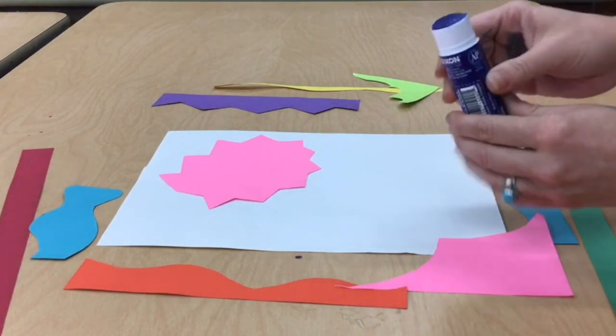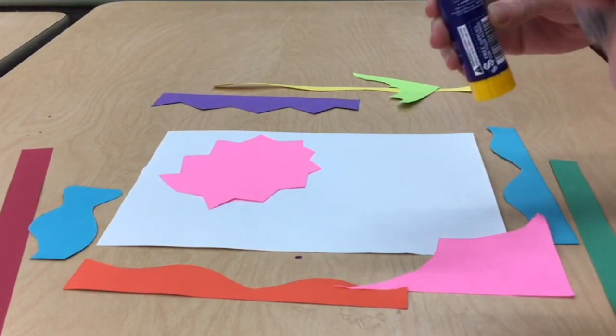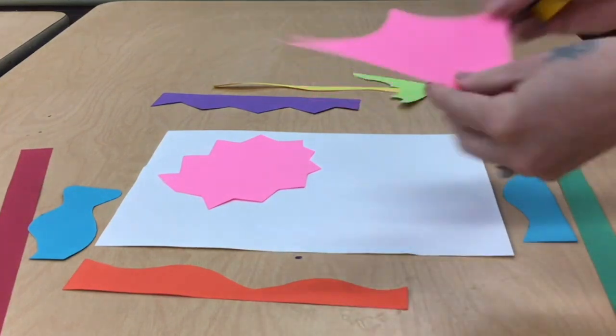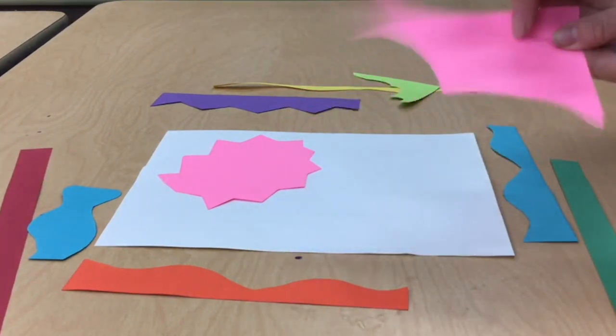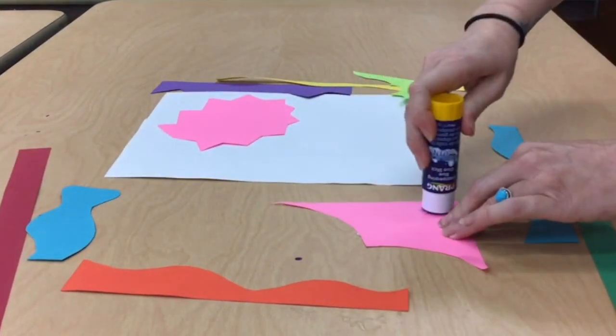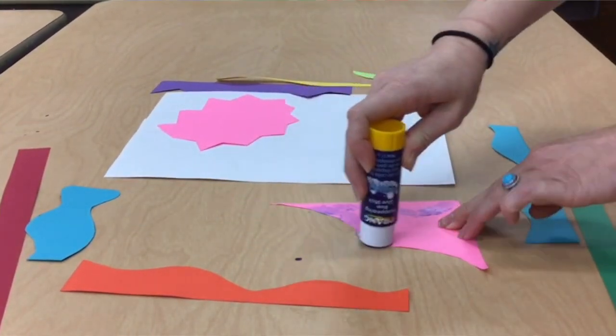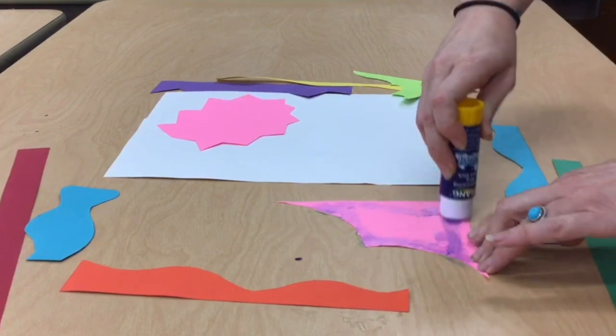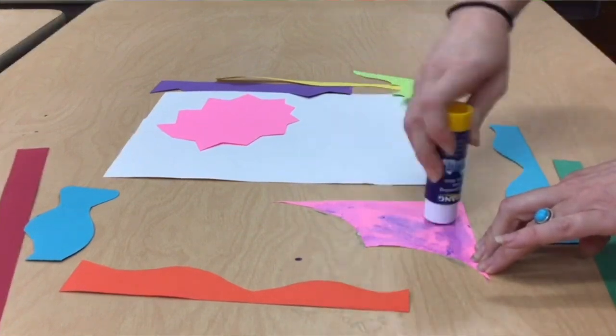When using the glue stick, remember only a little bit at the top. And don't forget to turn your paper cutouts over, gluing the back side of your paper to ensure that it is correctly placed where you originally wanted it.